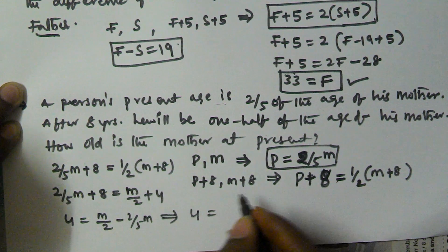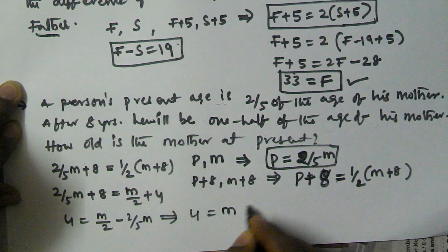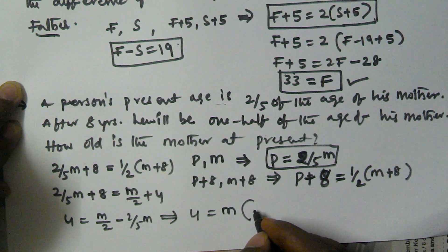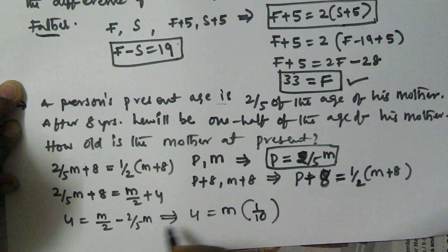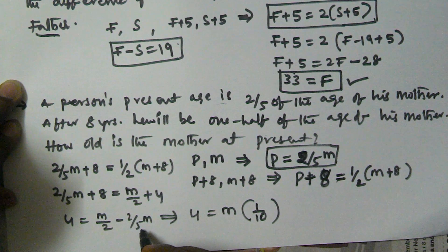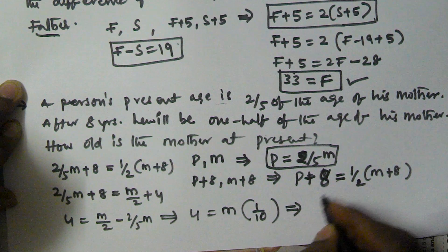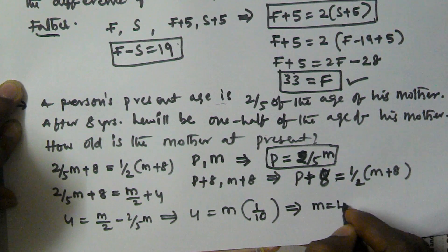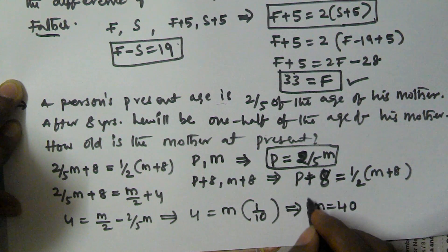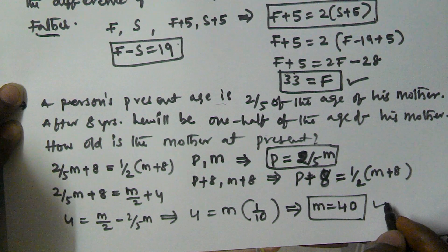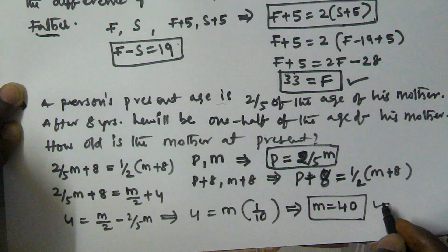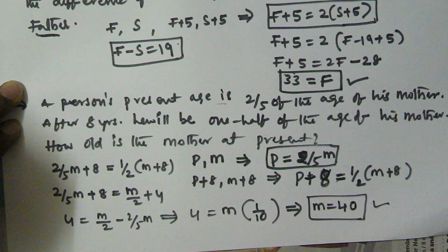So 4 equals m into 1 by 10, which means m is equal to 40. The mother's current age is 40 years. I hope you got this one. Thank you very much for watching this video. Please subscribe to my channel. Thank you.